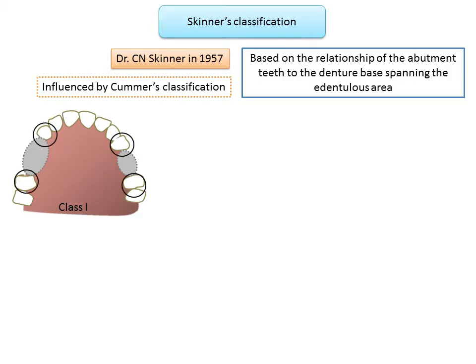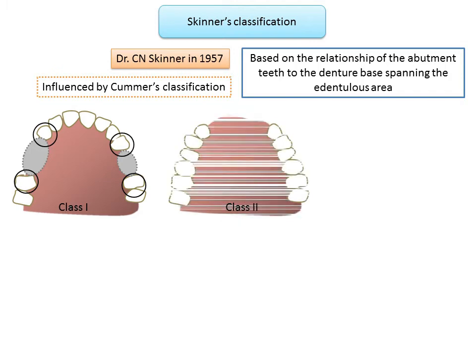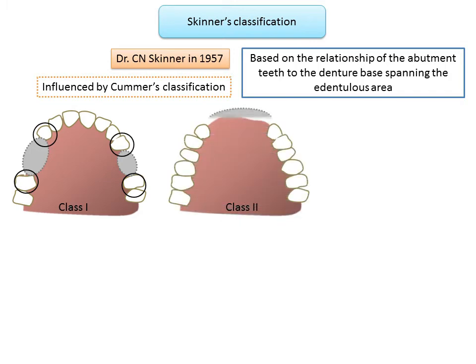Class 1 is wherein the abutment teeth are present anterior and posterior to the edentulous base; it may be either unilateral or bilateral. Class 2 corresponds to partially edentulous arches wherein all the teeth are present posterior to the denture base, which functions as a partial denture unit; it can again be unilateral or bilateral.